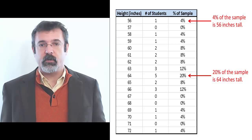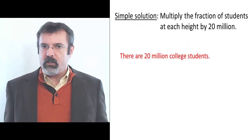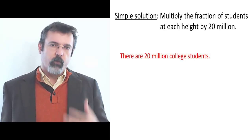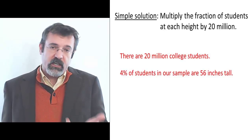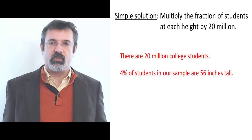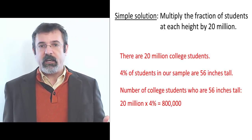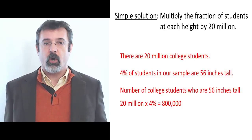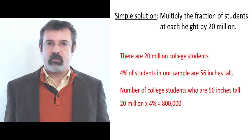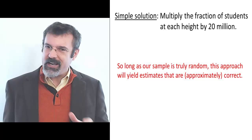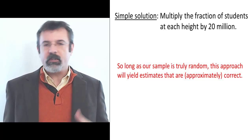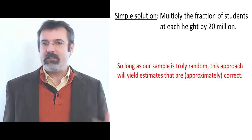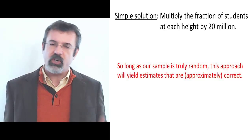20% of the students are 64 inches tall. We know that there are 20 million college students in the United States, and 4% of the students in our sample were 56 inches tall. So we can estimate that 4% of all college students are 56 inches tall — that's 800,000 students. As long as our sample is truly random, this approach is adequate. On average, we'll get approximately the right number of students at each height.